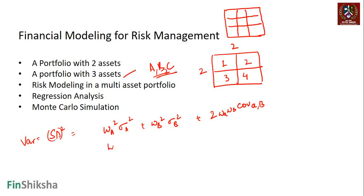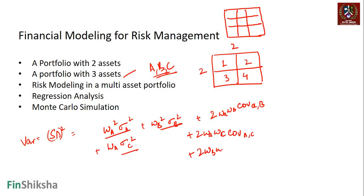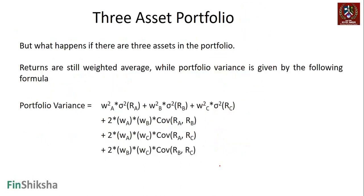So what are the nine terms going to be? We will add a third term, making terms one, two, and three. Then we add two·wA·wC·covariance(A,C) plus two·wB·wC·covariance(B,C). So there are three variance terms and six covariance terms — three plus six gives nine terms.